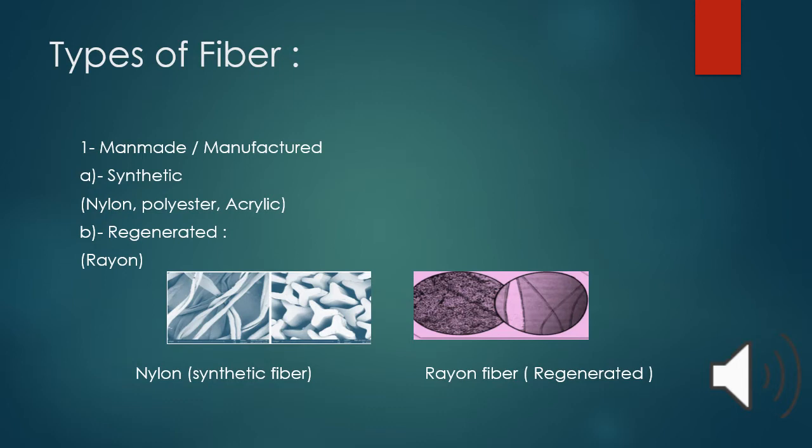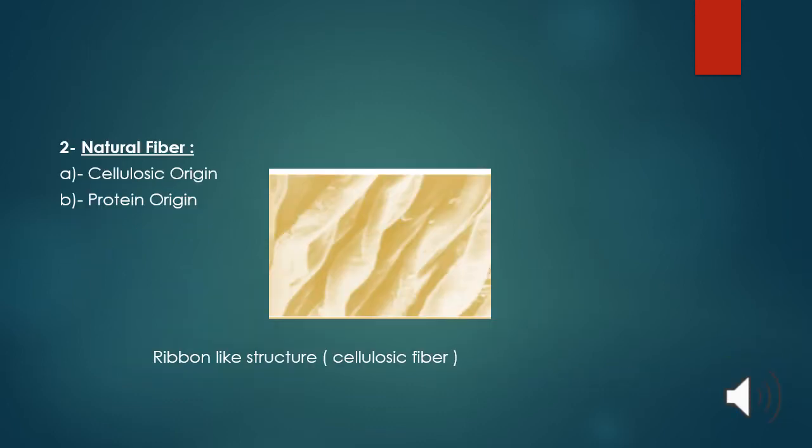Now natural fibers. Natural fiber contains cellulosic origin and protein origin. This is the ribbon-like structure of cellulose fiber. The fiber made with ether or esters of cellulose which can be obtained from the bark, wood or leaves of plants. It contains hemicellulose and lignan. Main application is in textile industry as chemical filters and as fiber reinforcement composites.